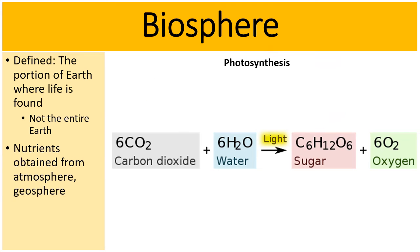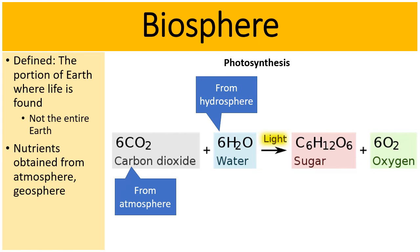And we remind ourselves that nutrients can be obtained from the other spheres. For instance, when we look at this formula here for photosynthesis, the carbon dioxide comes from the atmosphere, from the sky. The water used during photosynthesis, that comes from the hydrosphere.